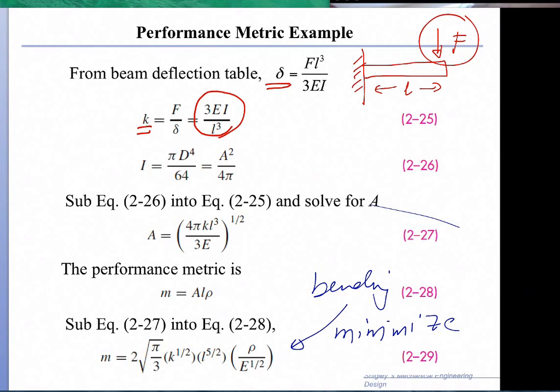If we have a round cross-section, the second moment of inertia is given as A squared over 4 pi. Then we can replace I with this quantity, and finally we get an expression for the cross-sectional area in terms of the stiffness K of the spring, the length, and the elastic modulus.